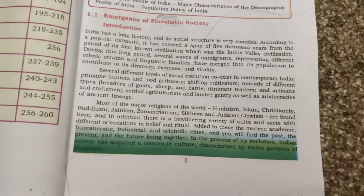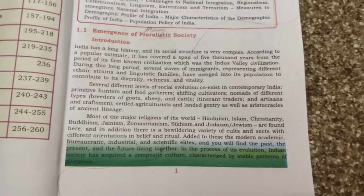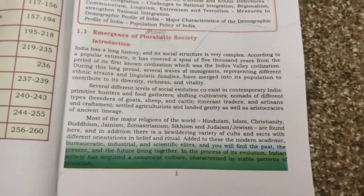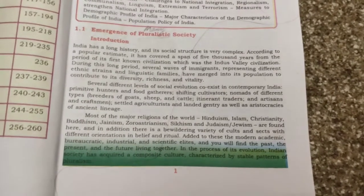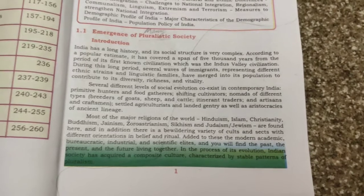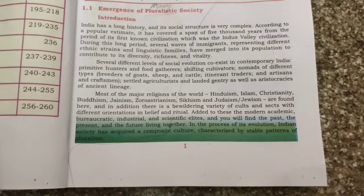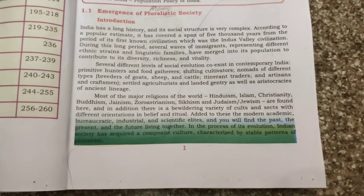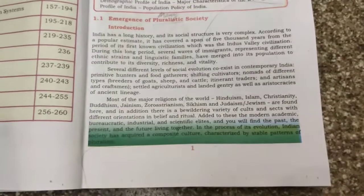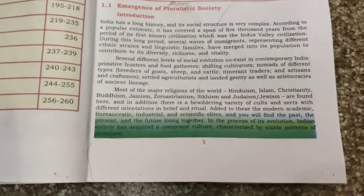Added to this, the modern academic, bureaucratic, industrial and scientific world means you will find the past, the present and the future living together. In the process of its evolution, Indian society has acquired a composite culture — meaning many cultures — characterized by stable patterns of pluralism. We have different kinds of society, which is pluralistic.